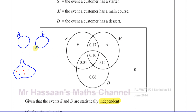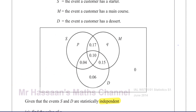So that's the difference between mutually exclusive and independent. Events can be independent and still have an intersection — no problem. In this case, S and D are independent: choosing a starter and choosing a dessert are independent, meaning someone choosing a dessert is not affected by whether they chose a starter.